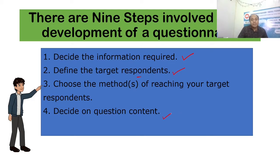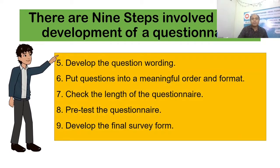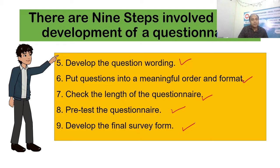Step four is to decide the question content — determine what the content of your questions will be. Step five is to develop the question wording, which is also very important; it should be easy, simple, and ready to understand. Step six is to put questions into a meaningful order — don't randomly choose questions to ask respondents. Step seven is to check the length of the questionnaire; do not make it too long so that people get bored. Step eight is to pre-test the questionnaire using a pilot survey. Step nine is to develop the final survey form after your pilot survey.